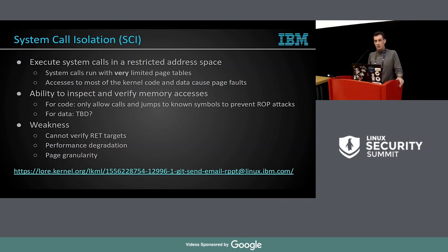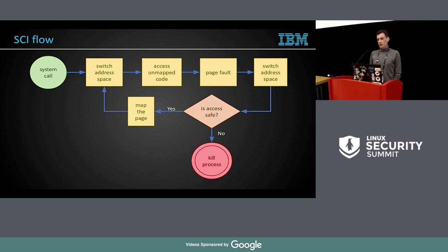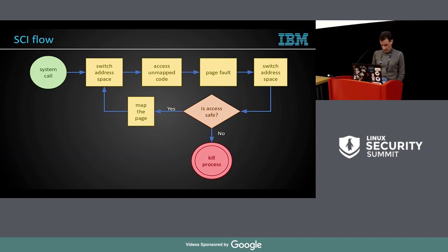It kind of worked to the extent that I could run micro-benchmarks, but after I did it I realized it's not a solution that's going to fly. What we intended to do was use these page faults to verify that access to kernel code is safe and thereby prevent possible ROP attacks. Whenever a system call tries to execute new functionality, it faults, causing a page fault. In the page fault handler we can run verifiers to ensure the call is to a known symbol and not the middle of some function. When access is considered safe, we map the required page into the restricted mapping; if not, we kill the process. It didn't really fly — it was just our first attempt at using page tables for improving container security.